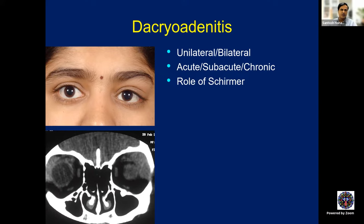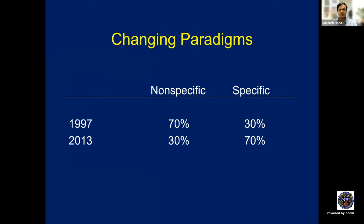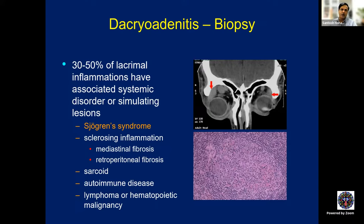Schirmer's is generally not affected in lymphoproliferative lesions, but is low in adenoid cystic carcinoma of the lacrimal gland. The changing paradigm: earlier, majority of dacryoadenitis were considered non-specific — about 70%. Since we started doing biopsy more often, majority are now found to be specific because we can identify an etiology through histopathology, serology, and radiological appearance. Only one-third remain non-specific or undiagnosed currently. The role of biopsy is very clear.